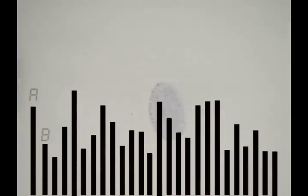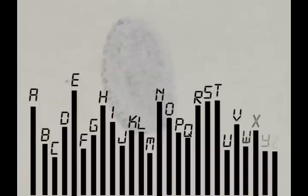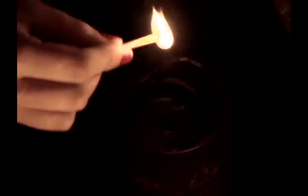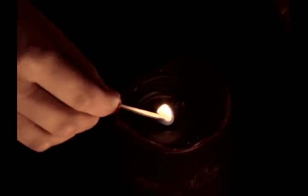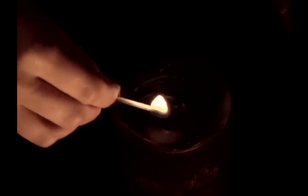A strong cipher is one which disguises your fingerprint. To make a lighter fingerprint is to flatten this distribution of letter frequencies. By the mid-15th century, we had advanced to polyalphabetic ciphers to accomplish this.